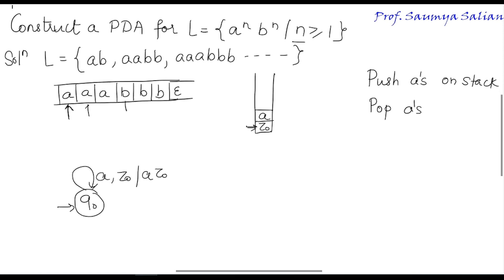The read header shifts to the right by one position. On reading an A when the stack top is already an A, I continue pushing A onto the stack via this loop transition.